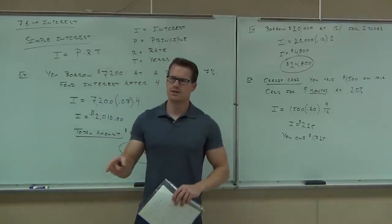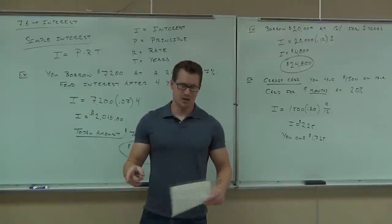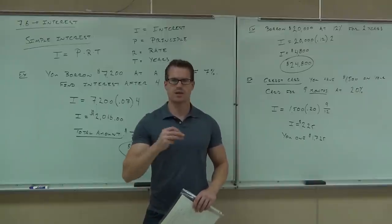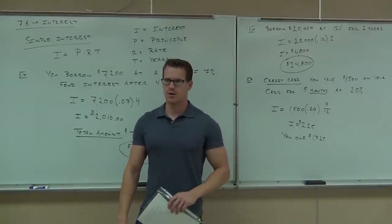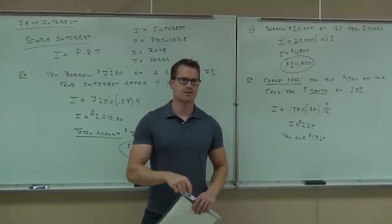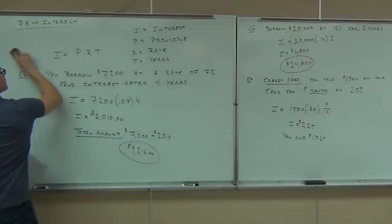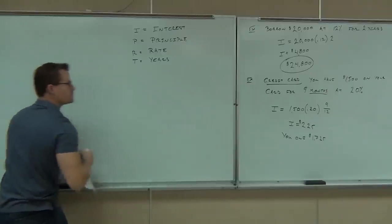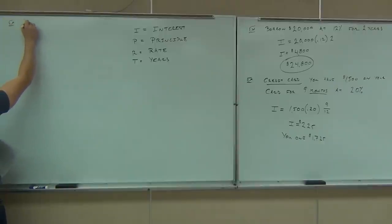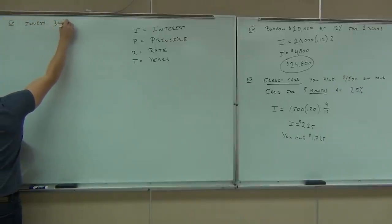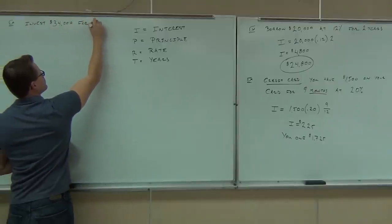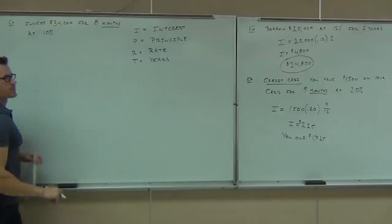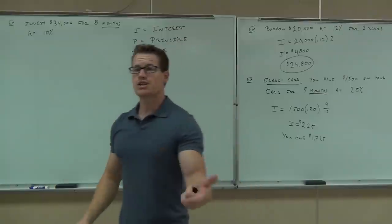Ready to try one on your own? Let's say your buddy comes to you and says: I've got a great deal — I'm going to give you 10% interest over eight months, you just put in some money and I'll give you some back. It's a quick investment, only eight months. So you invest $34,000 with this guy for eight months at 10% interest. Let's see how much money you're going to make.